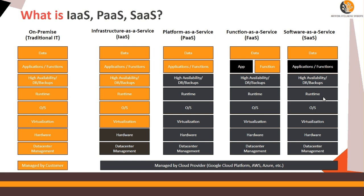There is another new concept: container as a service, which is a hybrid between infrastructure and platform. Think of Kubernetes — it is a hybrid container as a service environment that can automatically scale up or down the orchestration of containers. Kubernetes, which is containerized application orchestration, is a hybrid concept. In Google it is known as Google Kubernetes Engine; in Azure it is known as Azure Kubernetes Service. It falls somewhere between IaaS and PaaS.